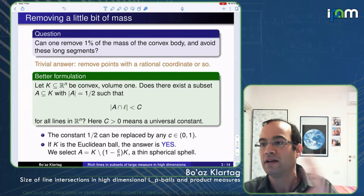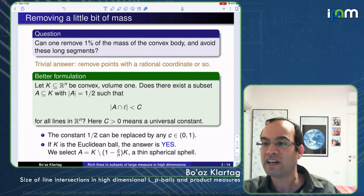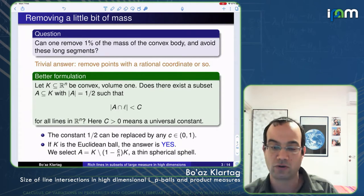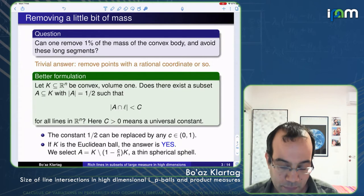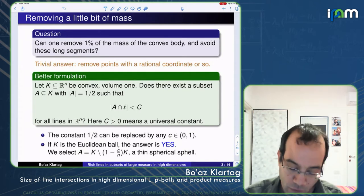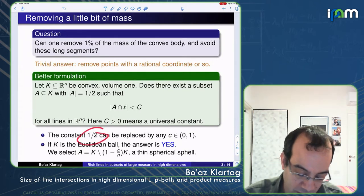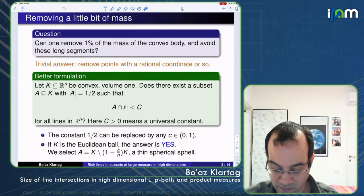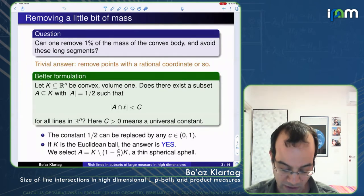If true, this would mean that there are long segments, but all of them go to a very small region in the convex set. Of course, replacing the 1% by one half, or any other constant between zero and one, doesn't really matter for most of this lecture.